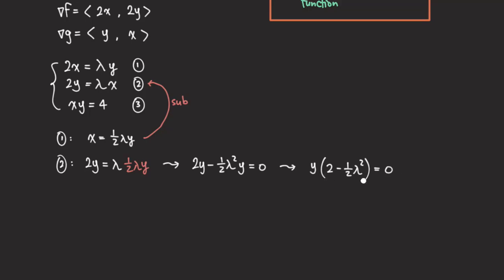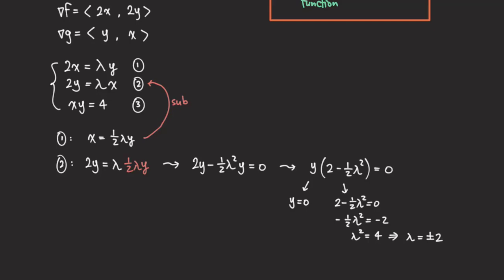This factored form gives us two cases. Case one comes from y = 0, and the other case is when 2 - (1/2)λ² = 0, which gives λ² = 4, so λ = ±2. So in total we actually have three cases: y = 0, λ = 2, and λ = -2.